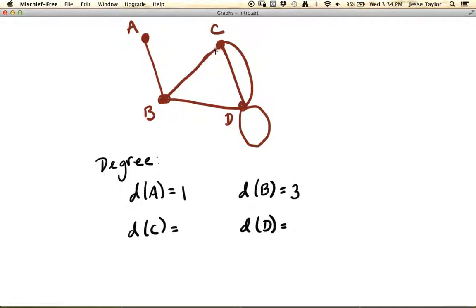The degree of C will be 1, 2, 3, because three edges meet at C. And then, I've included D here because we want to figure out, okay, well, a loop is a single edge, but it hits that vertex twice. So how do we account for that? And it ends up being that we account for it by counting all of the ends of the edges. So in this case, the degree of D will be 1, 2, 3, 4, 5. So a loop is going to contribute 2 to the degree of a vertex.